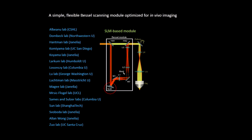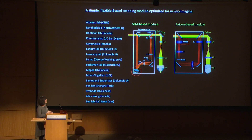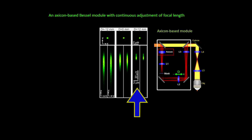An alternative is to use an axicon — the same optic used in supermarket checkout lines — to generate a Bessel beam. It is much cheaper: the whole module is only about $5,000 and is much more compact. The problem with axicon-based methods is that you cannot easily tune the Bessel beam length, but my postdoc Rongwen figured out that you can simply translate a lens inside the module to generate Bessel beams of different lengths. Because this system is so compact, we can now easily implement it on any kind of microscope.